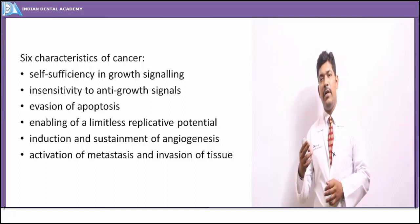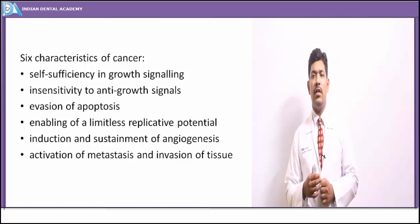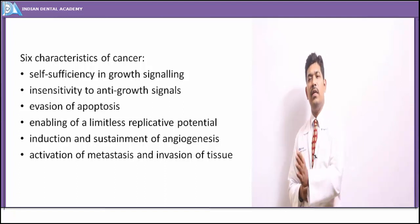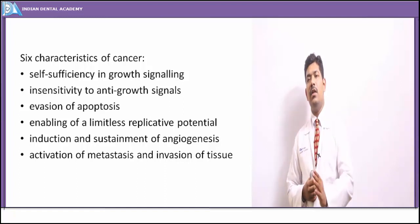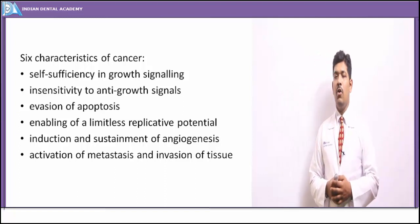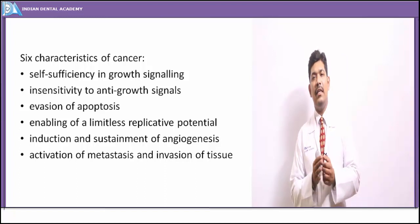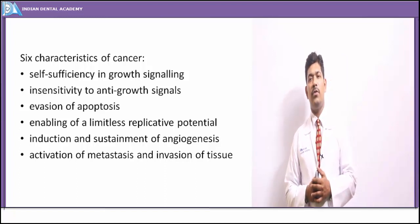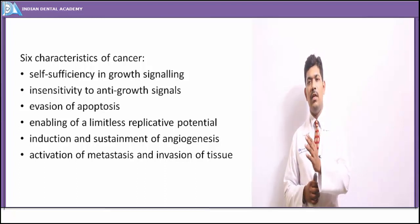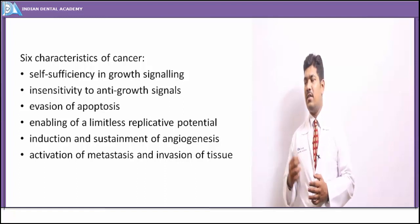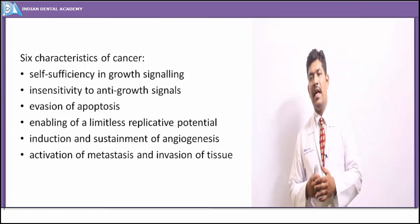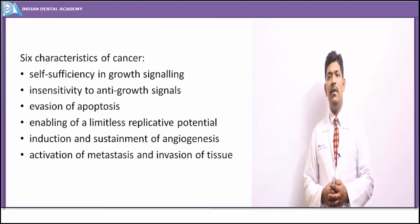The second point is insensitivity to anti-growth signals. When there is an autonomous signaling process enabling the tissue to grow, it is obviously insensitive to external growth limiting signals. That is the second characteristic. For that to happen, the tissue must also evade the apoptotic process — there is a complete bypass of apoptosis, wherein the molecules responsible for it are totally bypassed and their effect is not seen in cancerous tissue. These three characteristics together enable the cancerous tissue to have limitless growth potentiality.